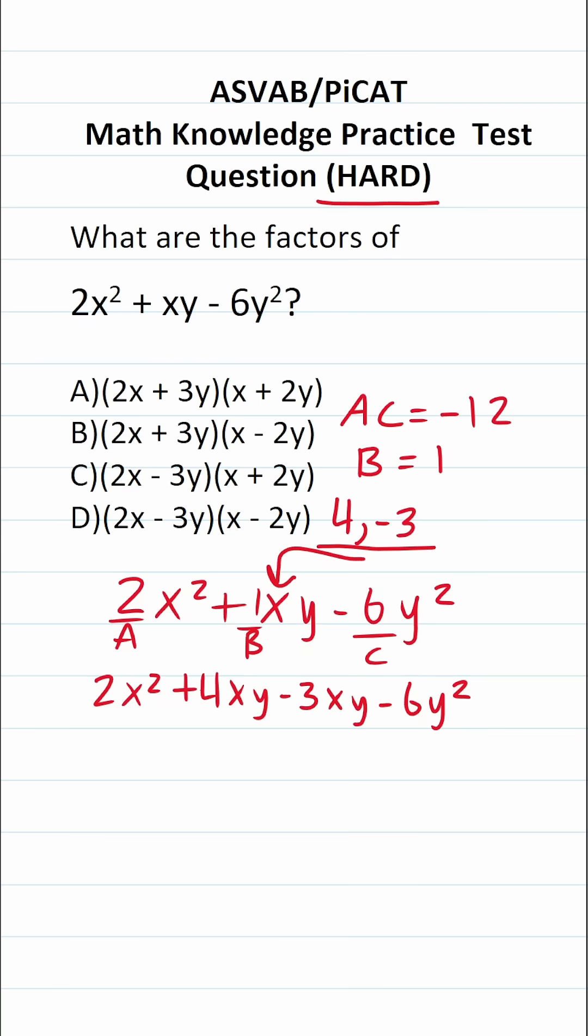Now let's factor this by grouping. It's pretty simple. We're going to imagine that this expression is split in half. So I'm going to try to factor something from 2x squared plus 4xy. And I can factor out a 2x. That leaves me with x plus 2y in parentheses.